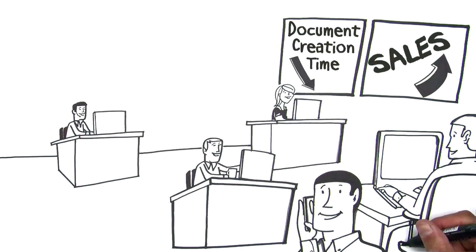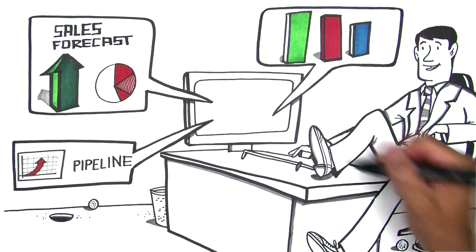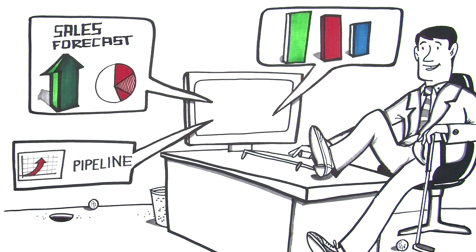With Drawloop, Company B is now a model of document creation efficiency. And the boss? He loves that Drawloop increases the accuracy of Salesforce data, allowing him to view, at any time, up-to-date reports.